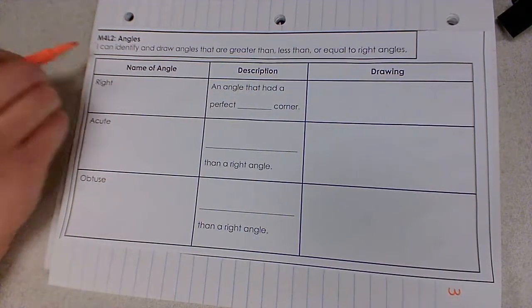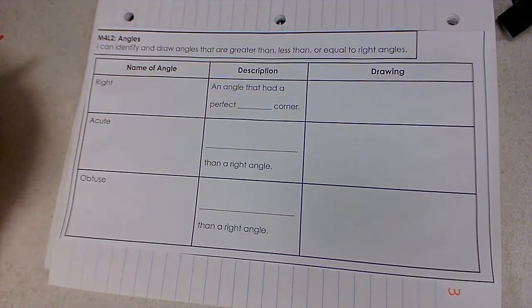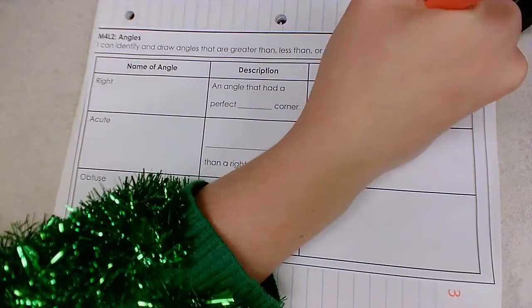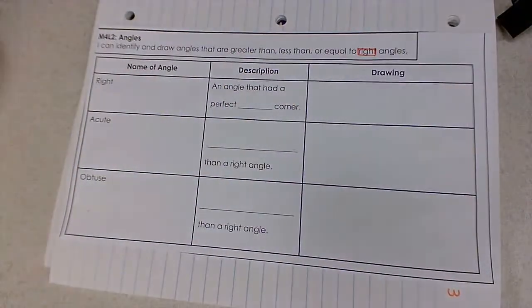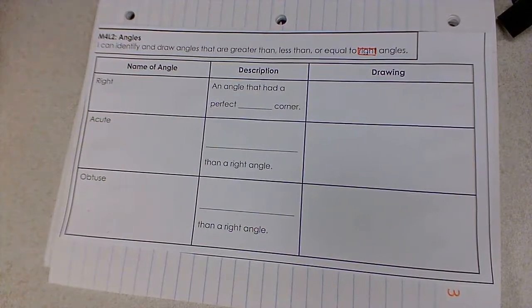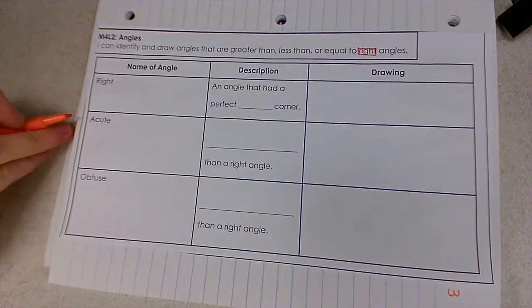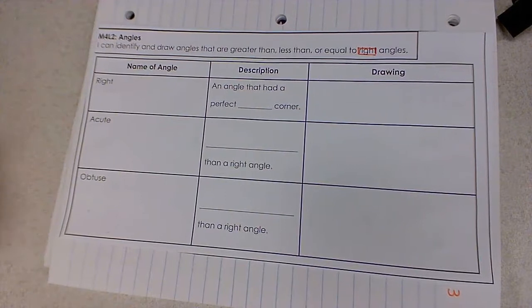Our objective is that I can identify and draw angles that are greater than, less than, or equal to right angles. Right angles is going to be a really important concept for us to know. Once we know what right angles look like we can really get a better idea of what an acute or an obtuse angle looks like.